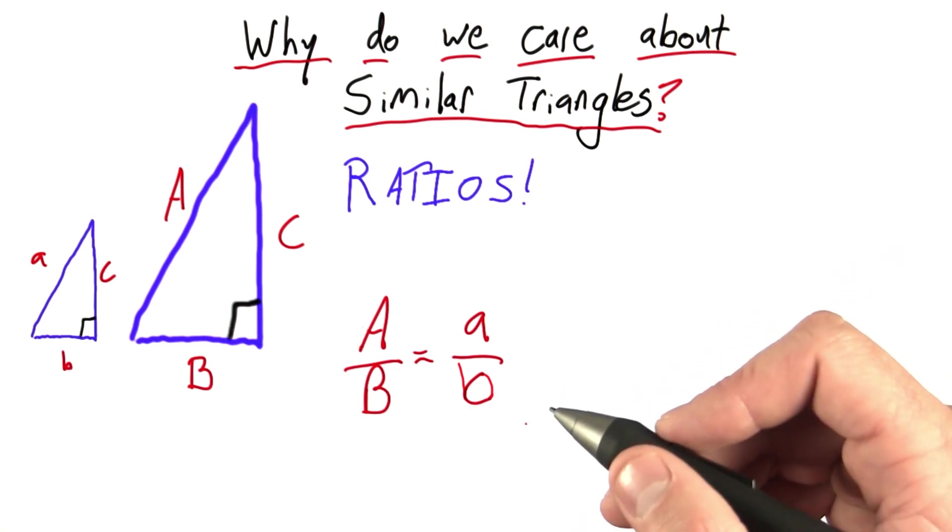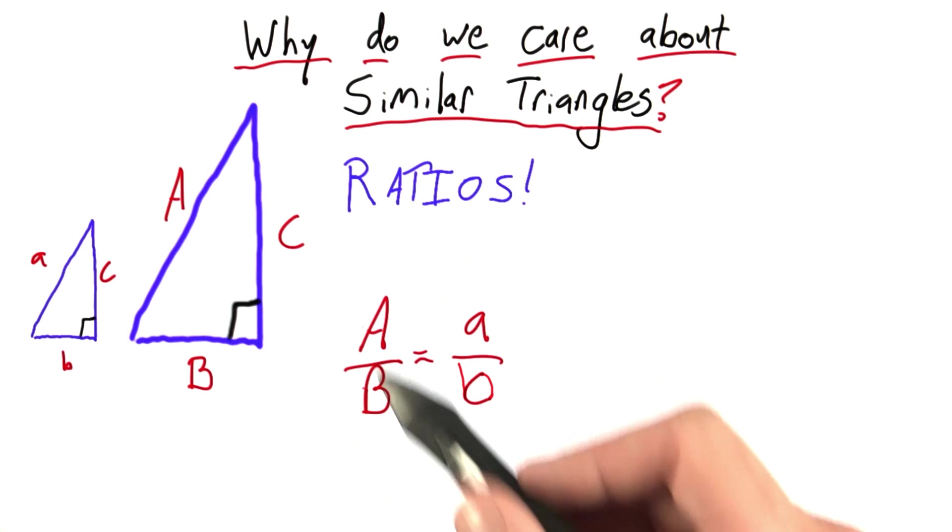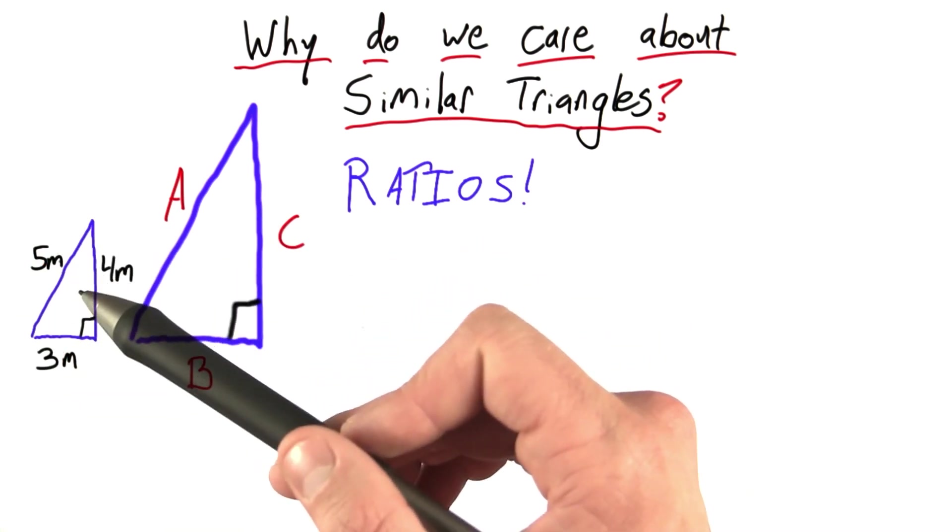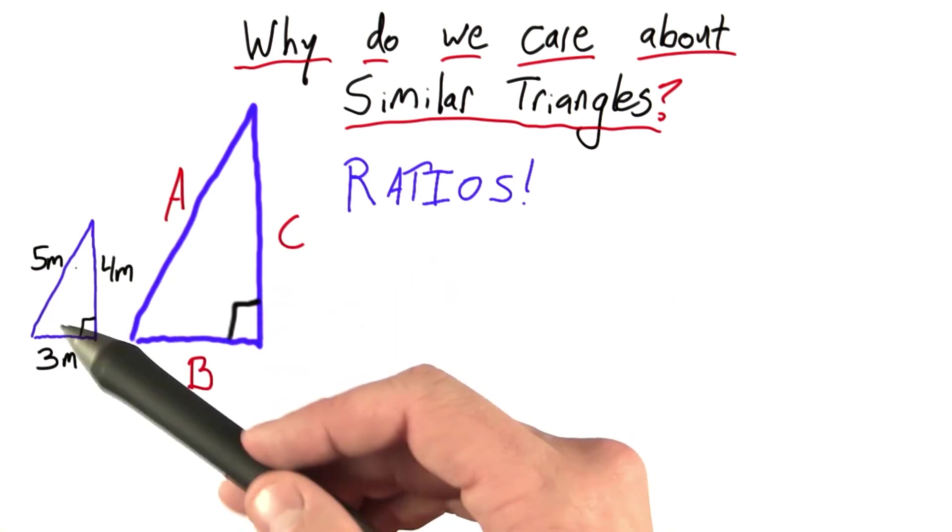For example, let's say I didn't give you variable names here, but I give you some actual numbers. So, 3 meters, 4 meters, and 5 meters are replacing our sides from before.